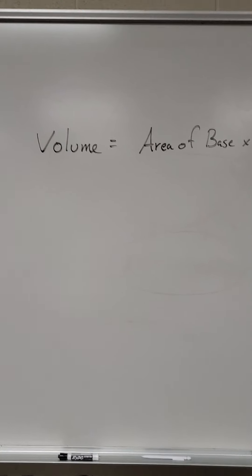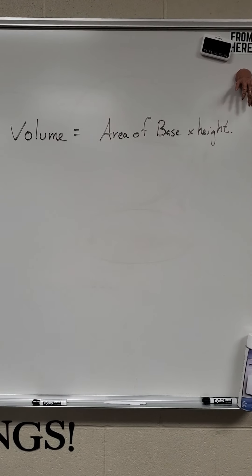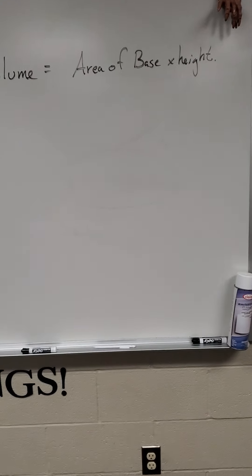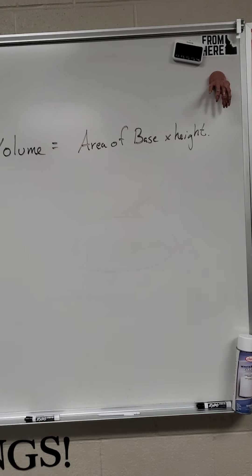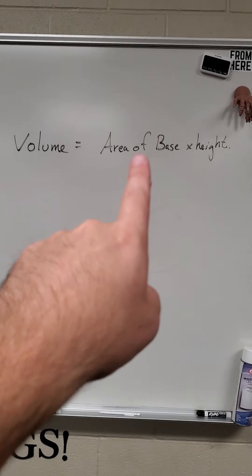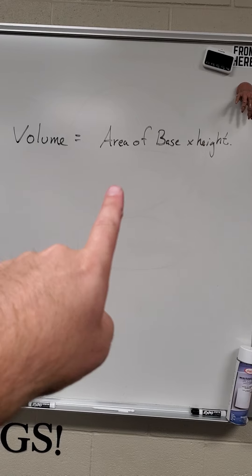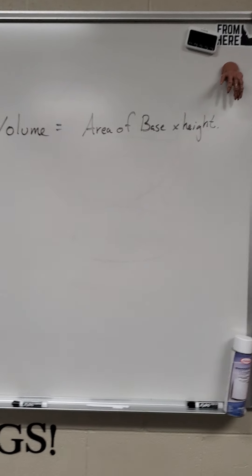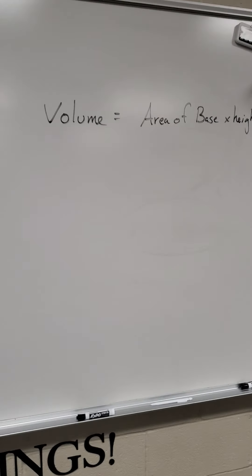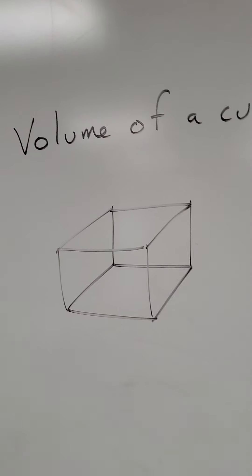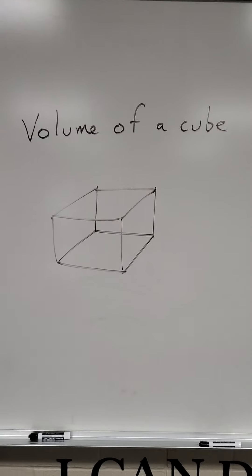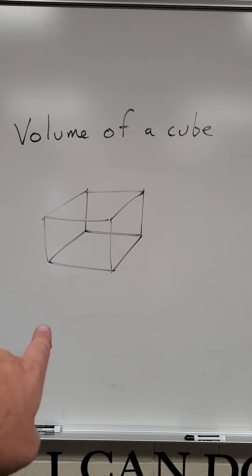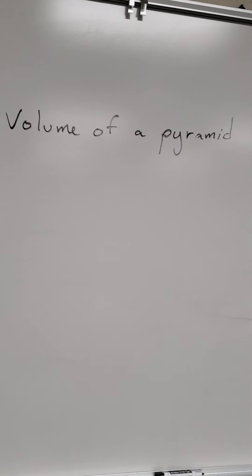So to start off, right off the bat, the first thing you need to know about volume is: volume equals area of the base times the height. In order to find the volume of any shape, you need to know what is the area of its base. Once you know that, you times it by the height. That's why we've been practicing area this week. So today we're going to do volume of a cube, and we're going to use the volume of a cube to help us find the volume of a pyramid.